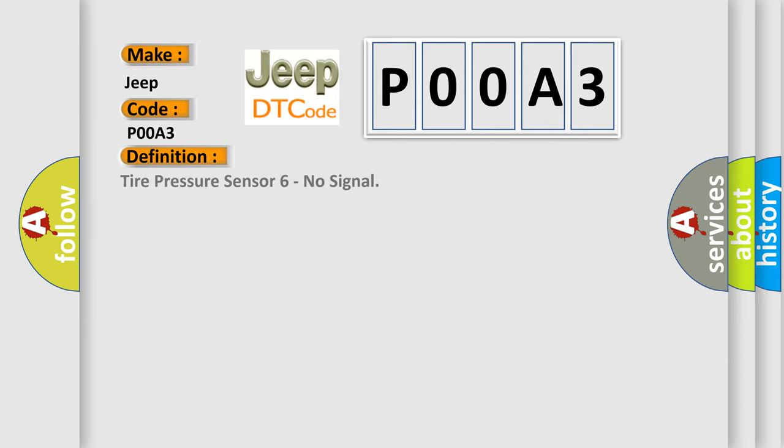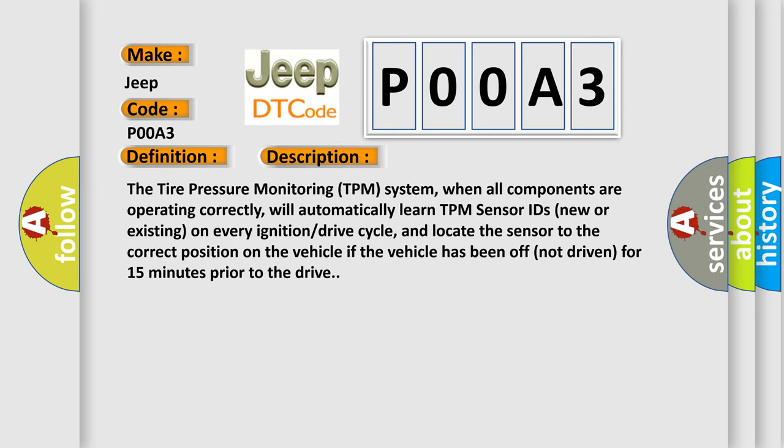The basic definition is Tire Pressure Sensor 6 No Signal. And now this is a short description of this DTC code. The tire pressure monitoring (TPM) system, when all components are operating correctly, will automatically learn TPM sensor IDs (new or existing) on every ignition drive cycle, and locate the sensor to the correct position on the vehicle if the vehicle has been off (not driven) for 15 minutes prior to the drive.